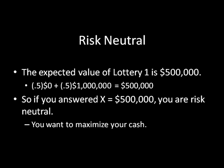So let's begin by talking about risk neutrality, which will define the other two things: risk aversion and risk acceptance. The expected value of lottery one is $500,000, and that's pretty easy to see. The expected value is simply the number of dollars you would expect to earn on average by playing lottery one. So that's 50% times $0 and then 50% times a million dollars, which equals $500,000 total. So if you answered X equals $500,000, you're what we call risk neutral. That just means you want to maximize your cash. If X were anything less than $500,000, you would want to play the lottery because the lottery gives you a higher amount on average. And if you had any value greater than $500,000, then you would want to take that one because that's going to give you more on average than the lottery would. So that's what risk neutrality is.